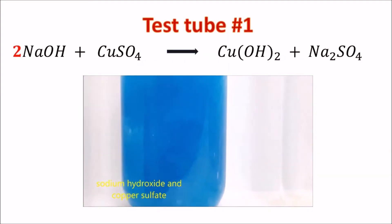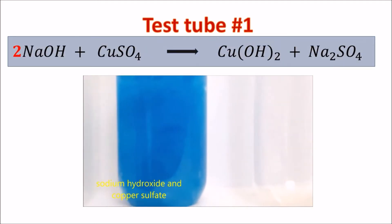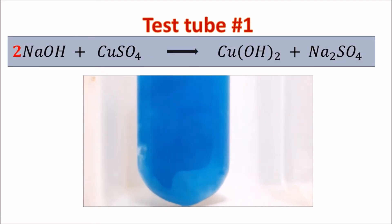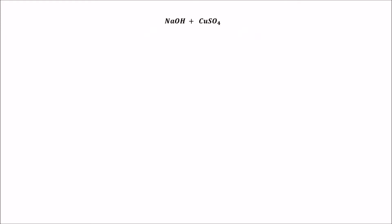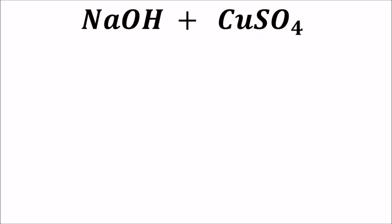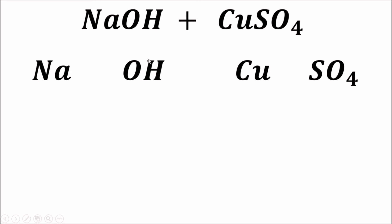Test tube number 1: sodium hydroxide and copper sulfate. We have sodium hydroxide plus copper sulfate. We will separate the components: sodium, hydroxide, copper, and sulfate. Then we will assign their charges: Na has a charge of positive 1, OH negative 1, copper positive 2, and sulfate negative 2.